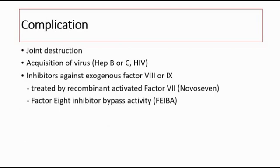Complications of hemophilia include: first, joint destruction — it happens due to recurrent haemarthrosis into the same joint, which will eventually destroy the joint, causing osteoarthritis and deformity. Second, acquisition of viruses such as hepatitis B, hepatitis C, or HIV. Third, inhibitors against the exogenous factor VIII or IX. The overall incidence of inhibitors is higher in hemophilia A at 15–25%, whereas for hemophilia B it is quite rare at only 1–3%.